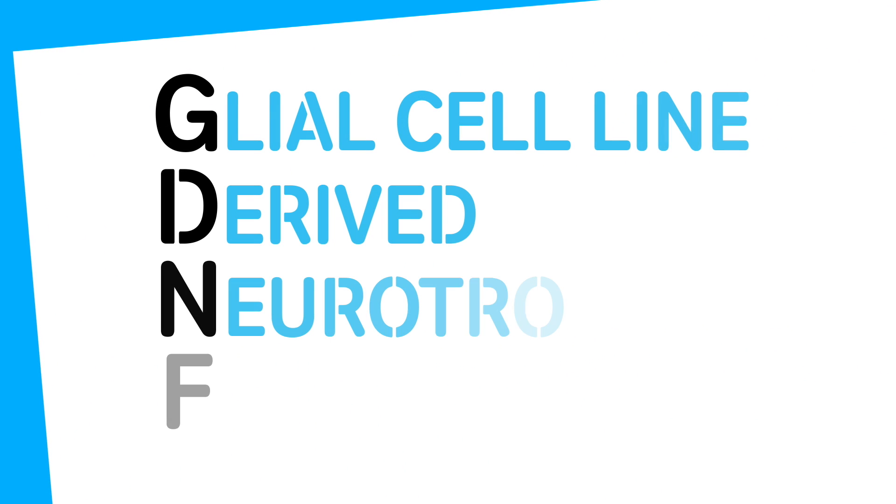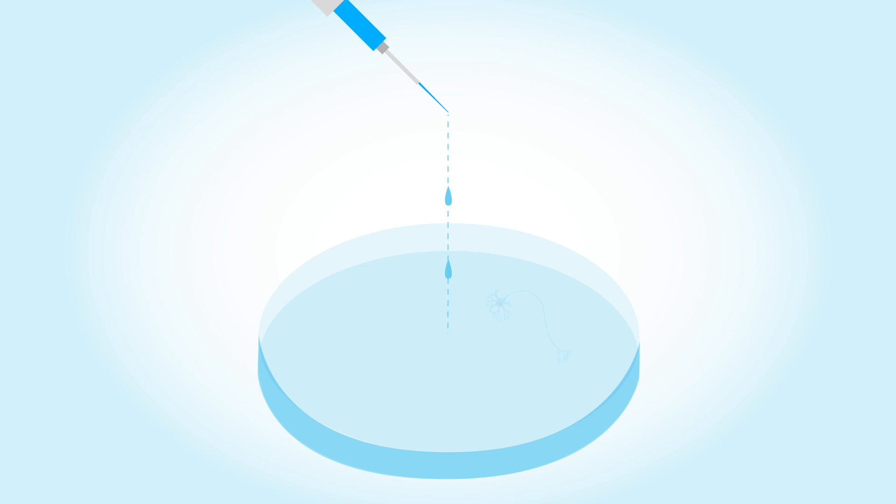GDNF is a special protein naturally produced inside the brain. It helps protect cells, especially those lost in Parkinson's. Lab studies have suggested it can help damaged cells to recover and regrow.